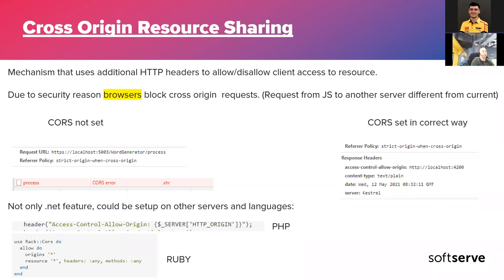Here you can see the difference between CORS policy turned on and turned off. When we don't configure CORS and just make a request to a second server which doesn't know about us, we will probably get a CORS error. If the server knows about us, we receive a normal response, and in the response headers we will see 'Access-Control-Allow-Origin' with our origin. For example, requesting localhost:5003 from localhost:3400.